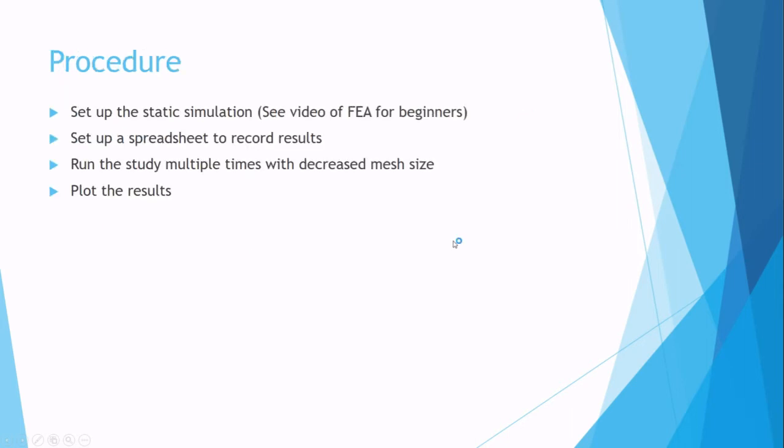The procedure: first, set up a static simulation — see the previous video on FEA for beginners if you do not know how to do this. Second, set up a spreadsheet to record the results. Then run the study multiple times with a decreased mesh size, and finally plot the results.